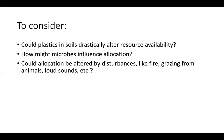For your research here at Governor's School, I want you to think about how these principles are influencing your results. Could plastics in the soil drastically alter resource availability and therefore alter plant responses? Maybe microbes are influencing allocation — there are a few different ways this might happen. Could allocation also be altered by other things, like a fire nearby, like grazing, like very loud sounds? There are all sorts of things that can influence allocation and the choices that a plant makes. We'll chat more about this in person and in our meetings, but please do let me know if you have any questions about the basic plant biology and resource allocation we talked about today. Thanks!